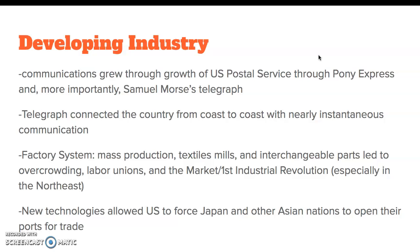Mass production, textile mills, and interchangeable parts are going to lead to the development of the factory system. That brings a lot of profits, but also negative things like labor unions, strikes, and overcrowding. This is a result of the market and the first industrial revolution. The Northeast is really going to advance in developing their industries and finished products, as opposed to focusing on agriculture like they do in the South. New technologies also allow the U.S. to force Japan and other Asian nations to open their ports for trade, bringing in a whole new flurry of goods and services.